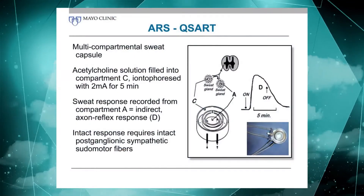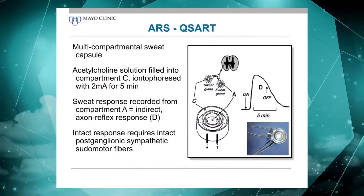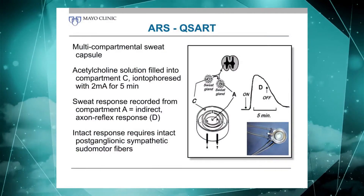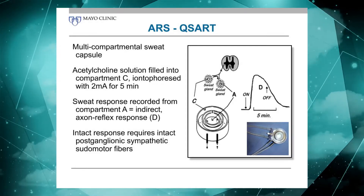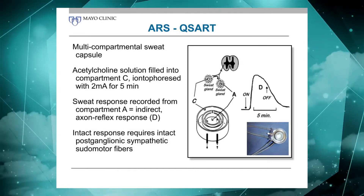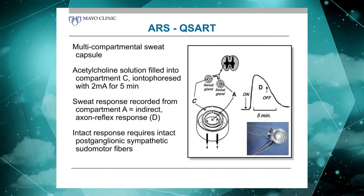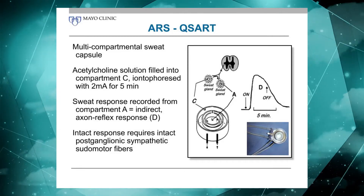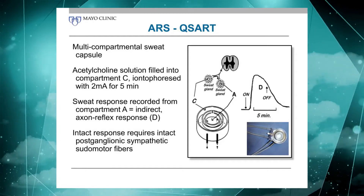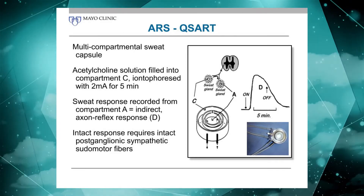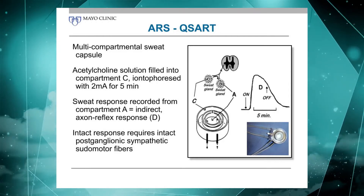Let's dive into the first of those tests, the pseudomotor axon reflex test. In order to understand the test, you should really go to its basis, which is the multi-compartmental sweat cell. This is basically a capsule that has two separated components. An outer compartment is filled with acetylcholine and then iontophoresed into the skin where a sweat response is induced. But we are not interested in the sweat response right under that outer rim, which is a direct sweat response — we are simply stimulating sweat glands. What we're really interested in is the response in the center compartment of that capsule, because that's separated from the outer rim and requires another form of stimulation to occur in order to see a response. And that's an axon reflex.